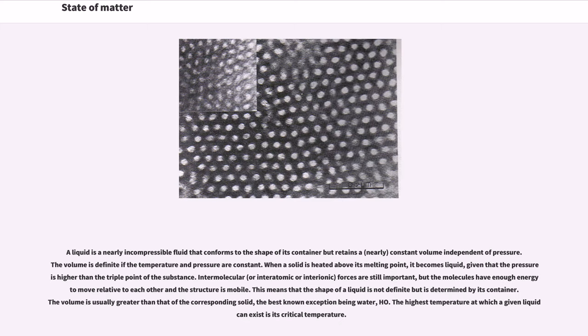A liquid is a nearly incompressible fluid that conforms to the shape of its container but retains a nearly constant volume independent of pressure. The volume is definite if the temperature and pressure are constant. When a solid is heated above its melting point, it becomes liquid, given that the pressure is higher than the triple point of the substance. Intermolecular, or interatomic or interionic, forces are still important, but the molecules have enough energy to move relative to each other and the structure is mobile. This means that the shape of a liquid is not definite but is determined by its container. The volume is usually greater than that of the corresponding solid, the best known exception being water. The highest temperature at which a given liquid can exist is its critical temperature.